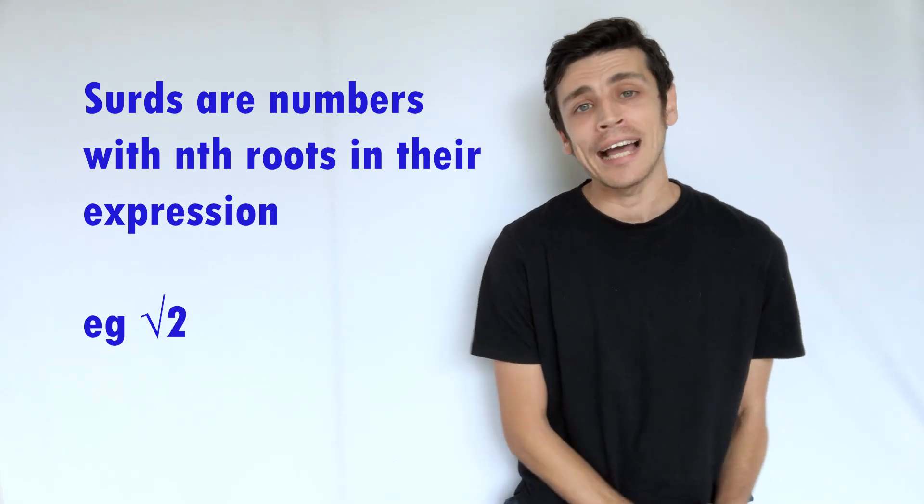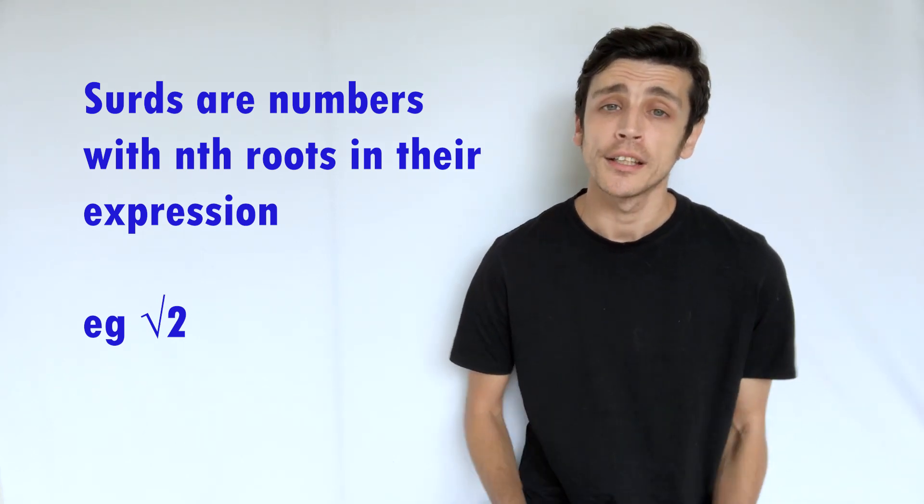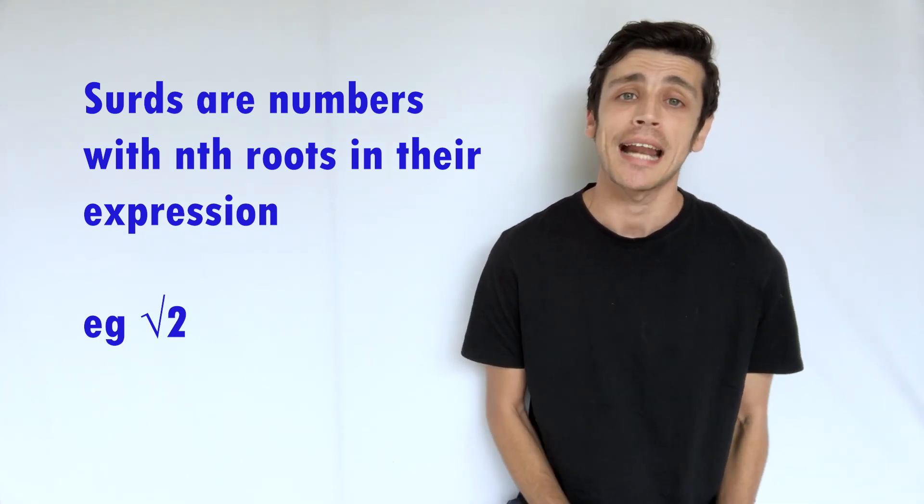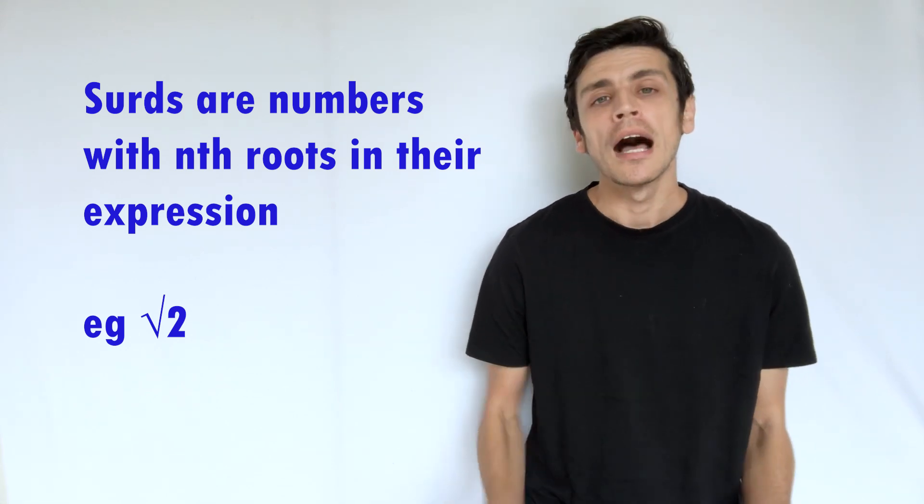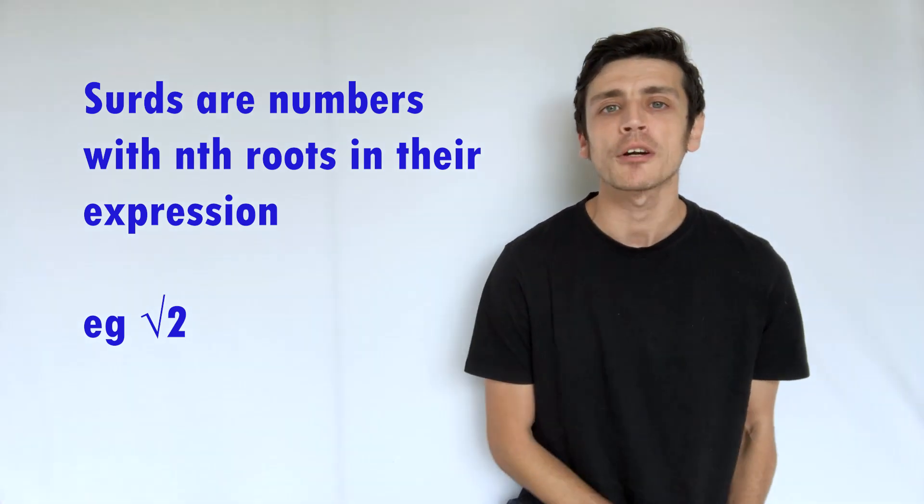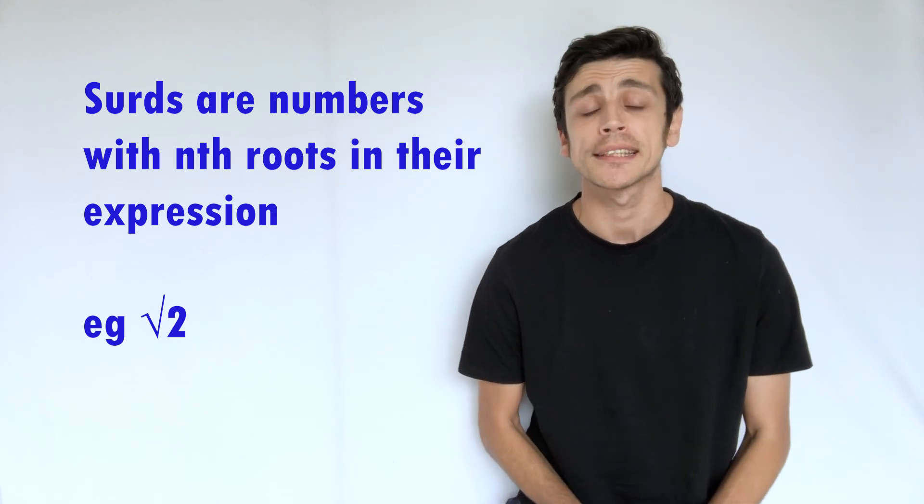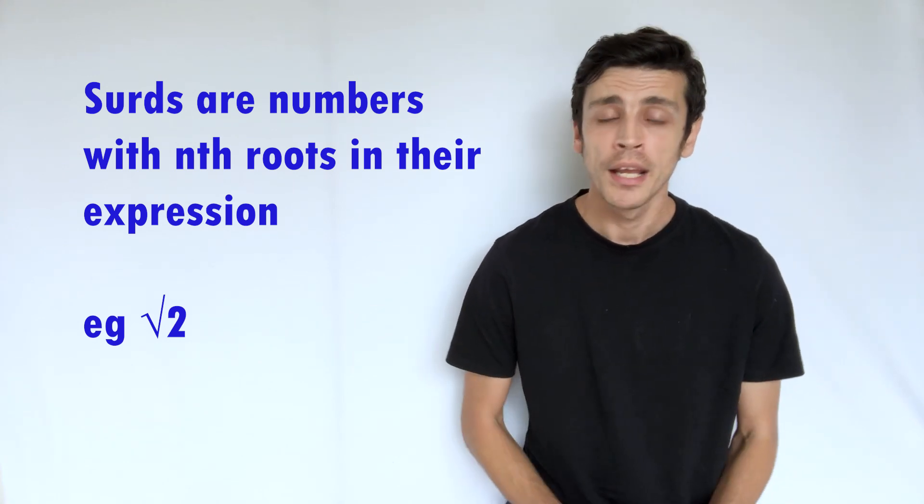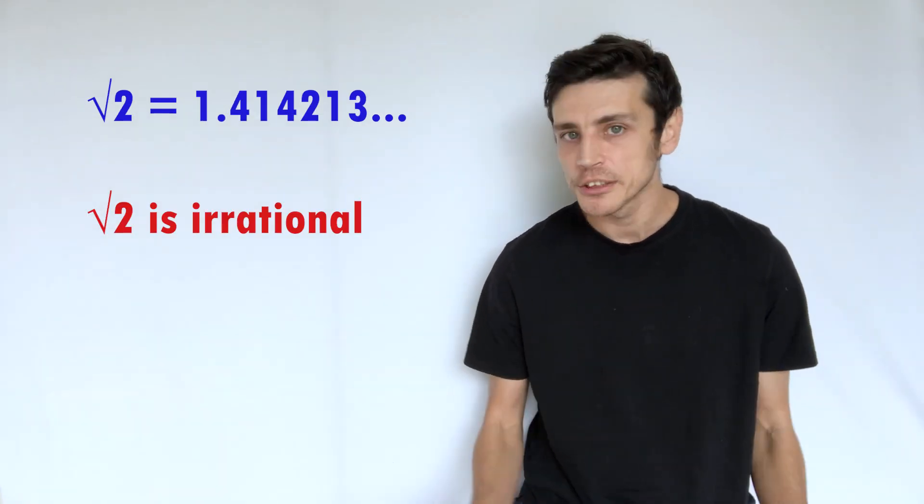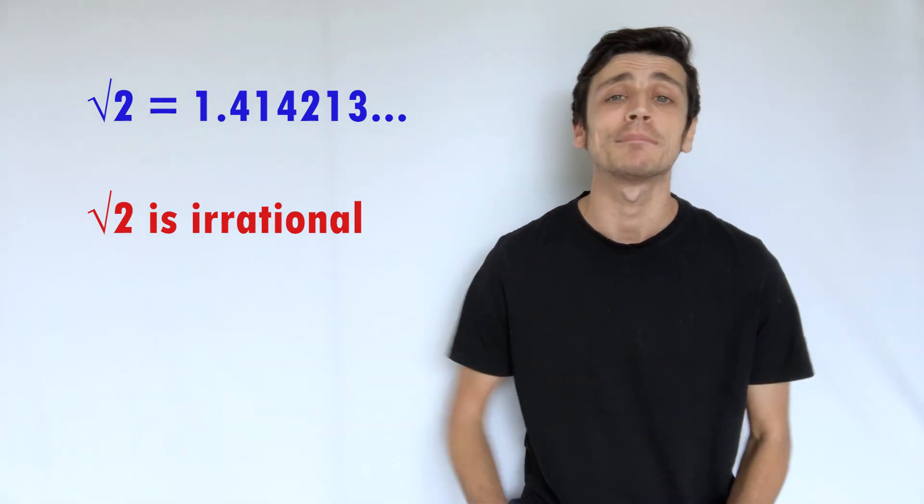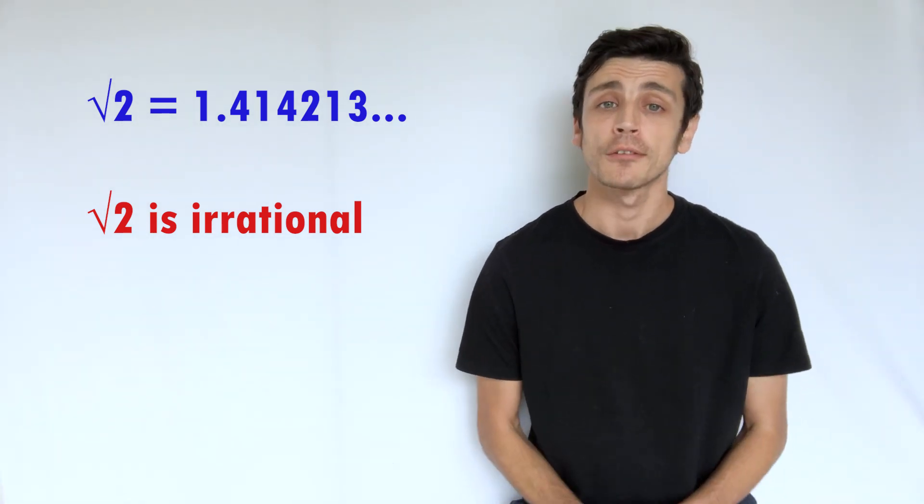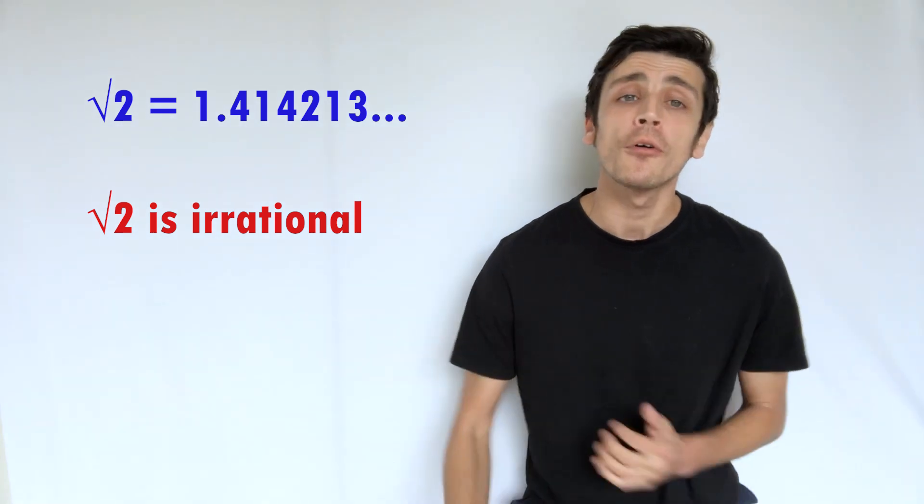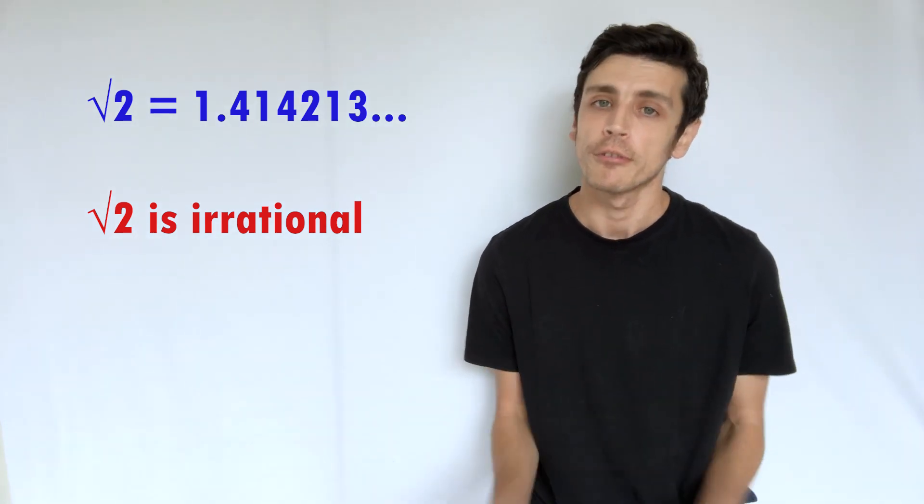We also have a lot of our surds, and surds are just numbers that have square roots. So a very common one that you'll come across if you do a lot of mathematics is of course the square root of 2. This is also in fact irrational because it can't actually be represented as any sort of fraction. It's 1.414 and it keeps on going on and on and on forever.